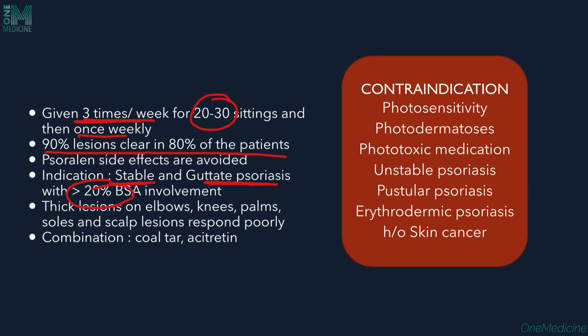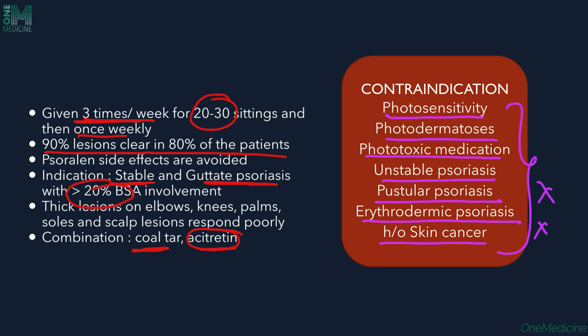Thick lesions on the elbows, knees, palms, and soles respond very poorly to phototherapy. We can combine phototherapy with coal tar or acitretin. We avoid phototherapy in patients with photosensitivity disorders, photodermatoses like polymorphic light eruption, solar urticaria, or actinic prurigo, patients on phototoxic medications, unstable psoriasis, pustular psoriasis, erythrodermic psoriasis, and history of skin cancer.